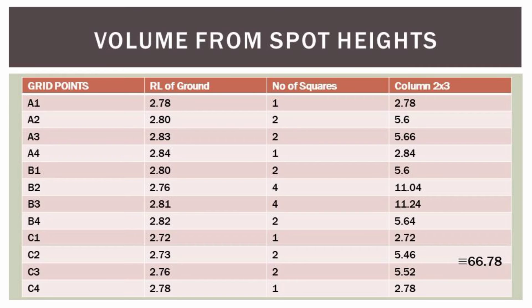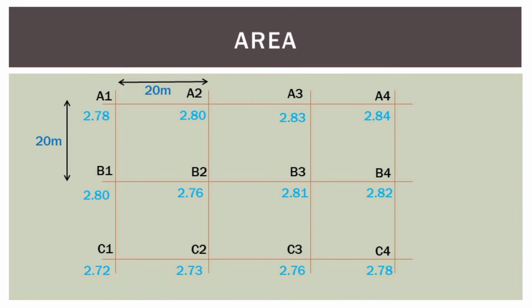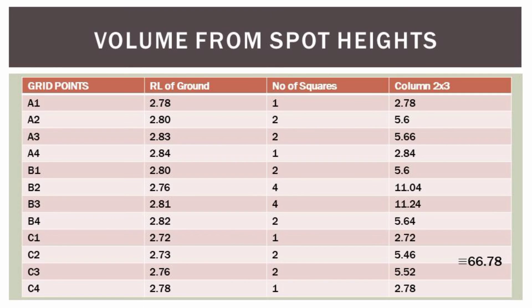On our first order of business, we identify on the grid points how many number of squares the point shares. Looking back at our plan, we observe that the grid point A1 shares only one square. Similarly, the same is done to all the other grid points by locating the number of squares shared within the given grid points.